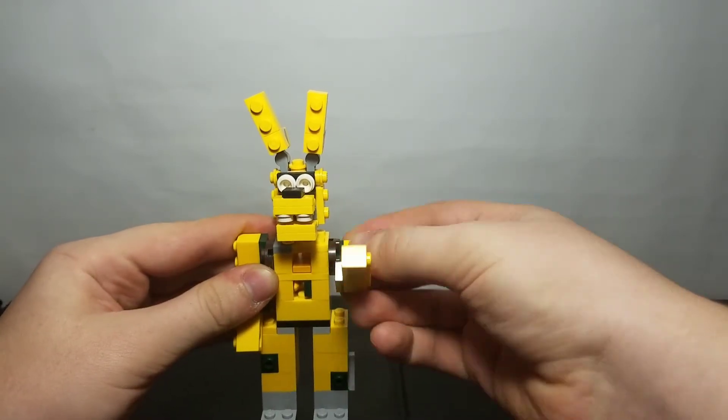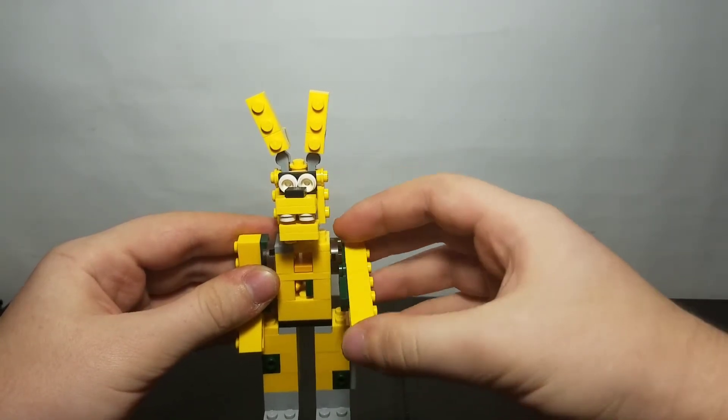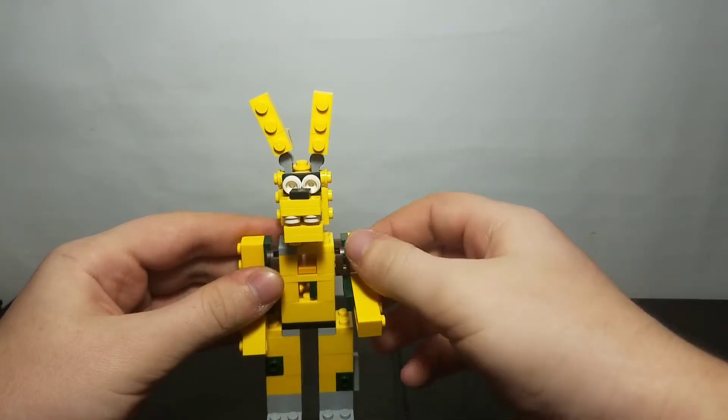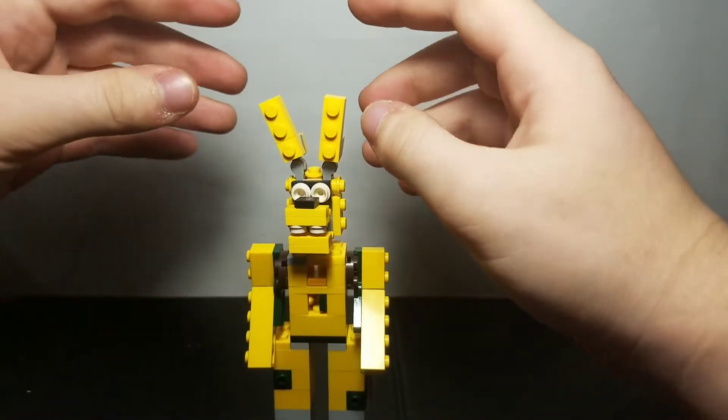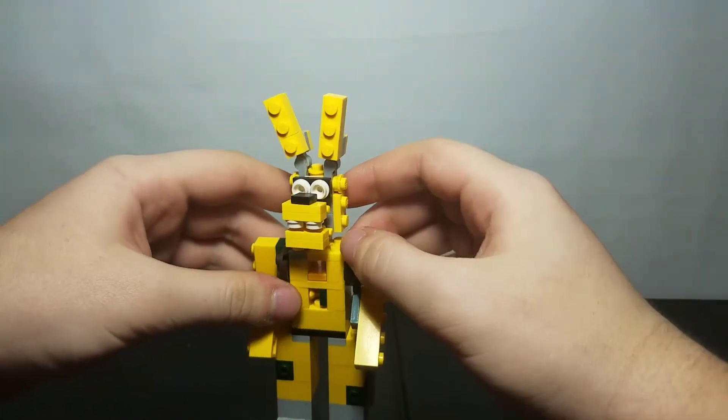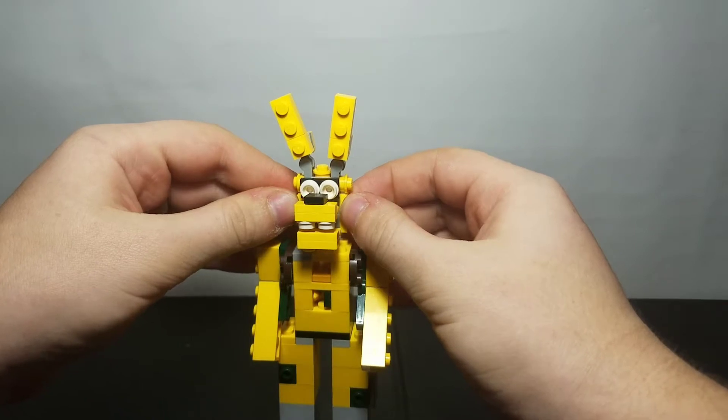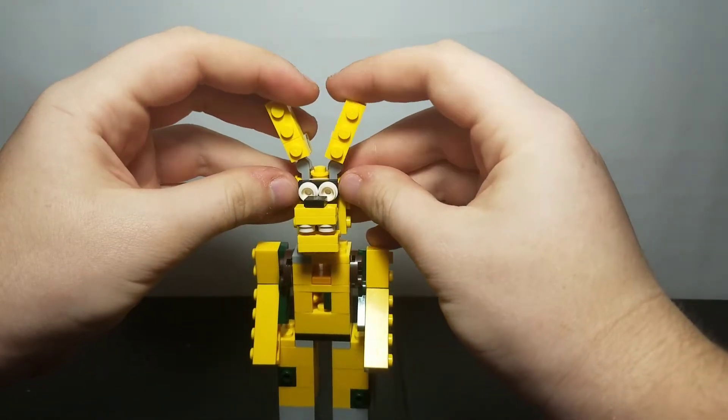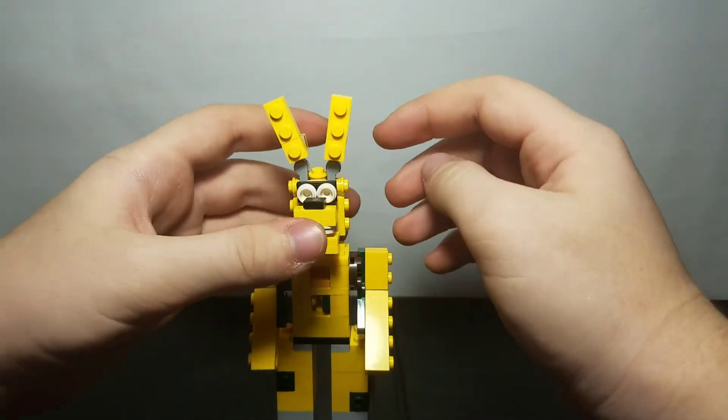He has the same articulation as all the other ones: rotation in the arms and bend in the elbow, as well as head rotation. For characters like Freddy, Foxy, and Bonnie, they have ear movement, so does he. He actually has ear